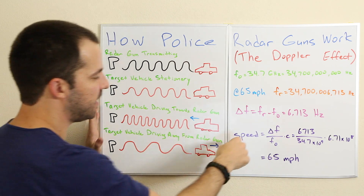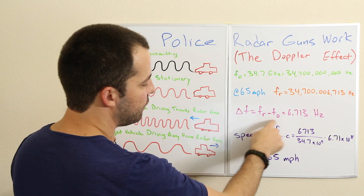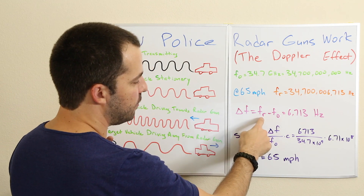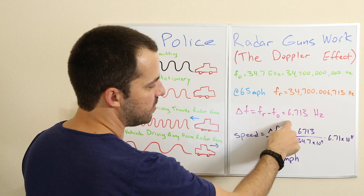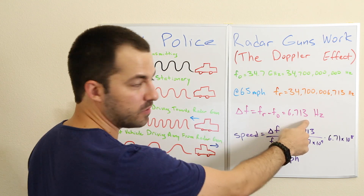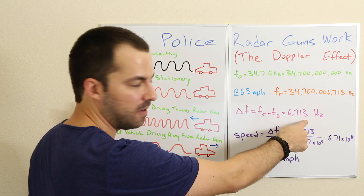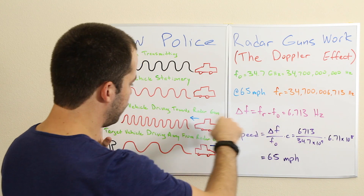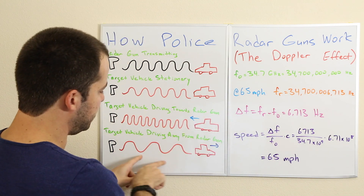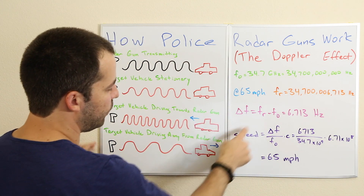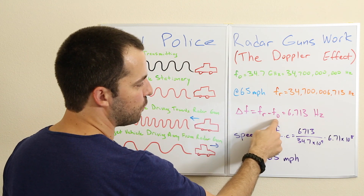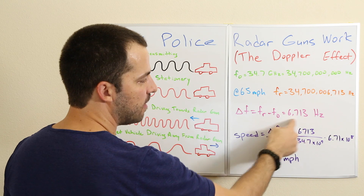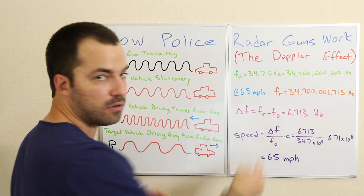If that's the case, the change in frequency — if the frequency has gone up minus the original frequency — this is going to be a positive number. If the reflected frequency goes down, we have a smaller number minus the original frequency, and this is going to be a negative number.